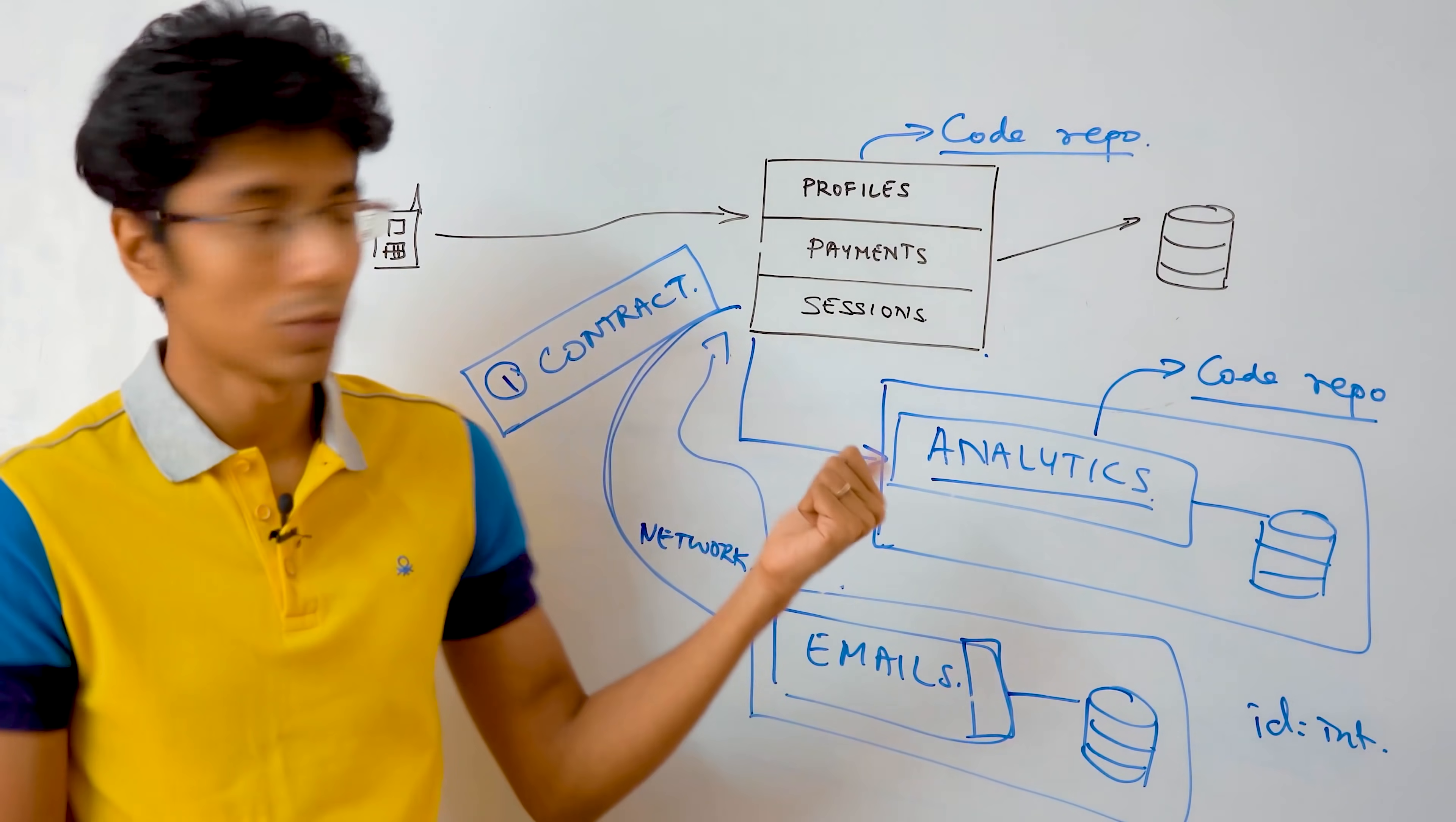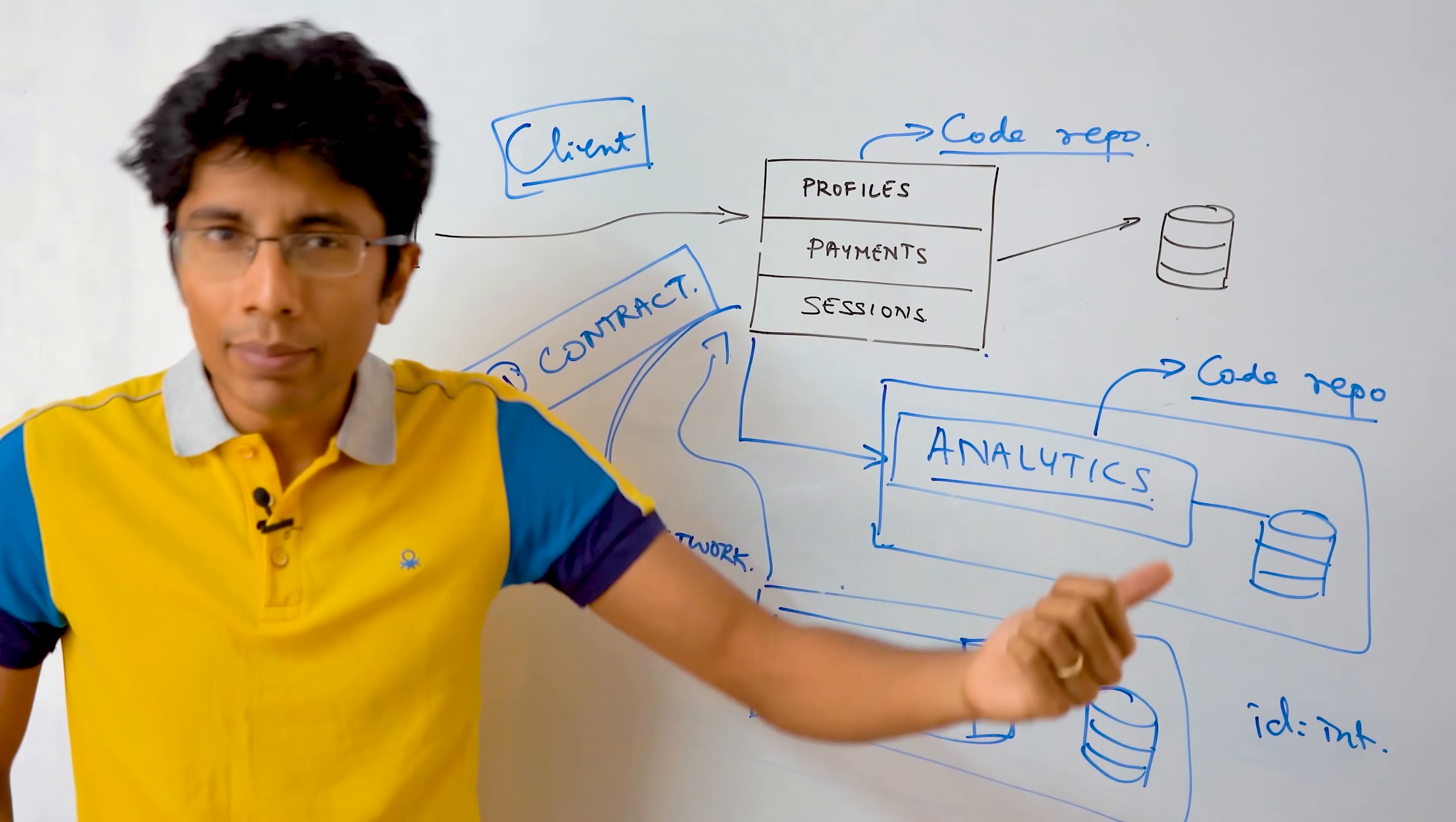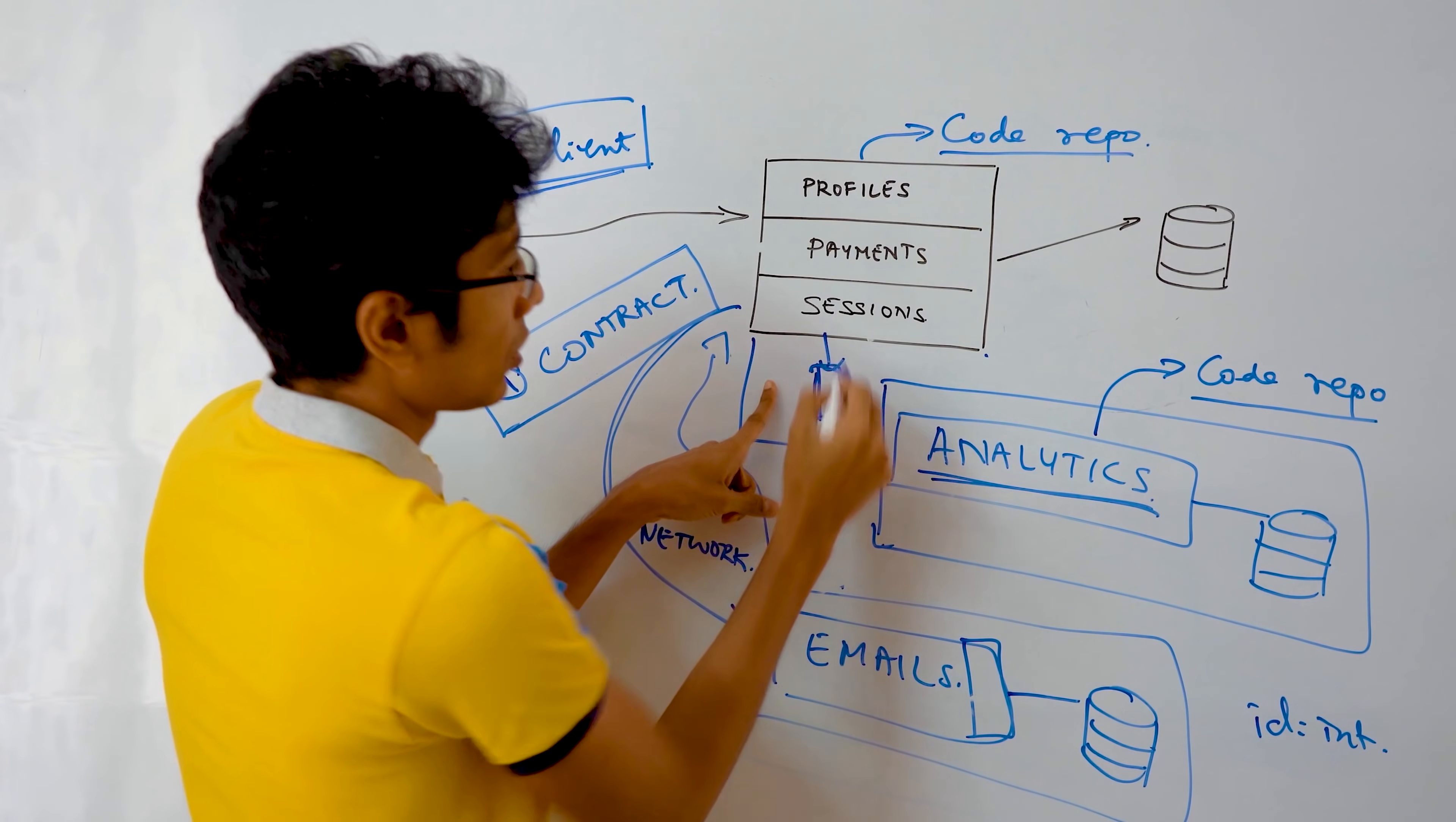These are also called clients. Whenever a service in session service wants to call an email service, it doesn't really read the contract. Technically what happens is you have something called a client. Each service has their own client. So if I'm an engineer for the analytics service, I say, well, you're going to be reading my contract, constructing the object in my way, that's pretty bad. So instead I will write some piece of code, make a library out of it. And anybody who wants to talk to analytics, you use this library to make these function calls.